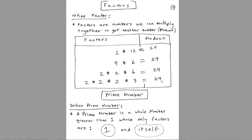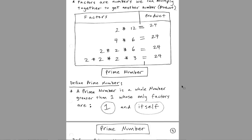We can have four different factor pairs for 24: 2 and 12, 4 and 6, 2, 2, and 6, and even 2 times 2 times 2 times 3 — which also equals 24. That last set of factors is a special type called prime factors.